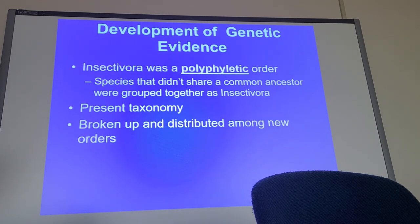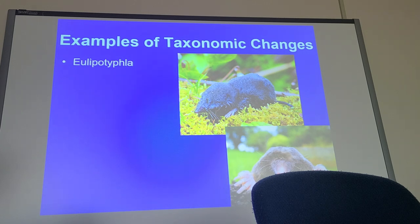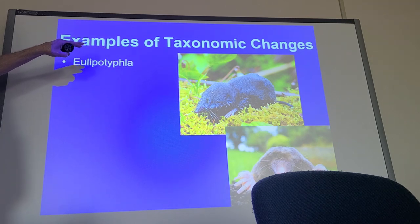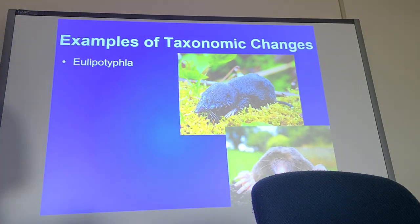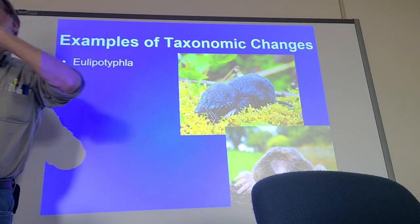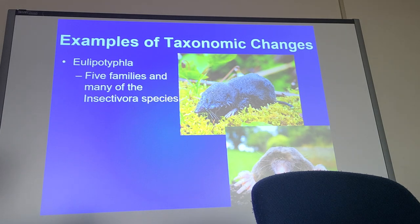When Insectivora disappeared, these groups were broken into different orders. A new order called Eulipotyphla was created — a neat name meaning 'fat and blind,' referring to the moles. It includes the shrews and the moles, five families total. Many were originally in Insectivora, and we have them here in the Nearctic region.